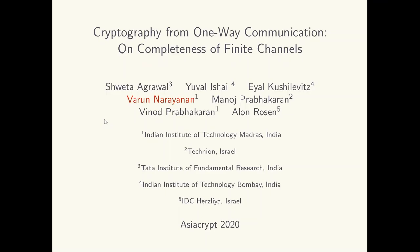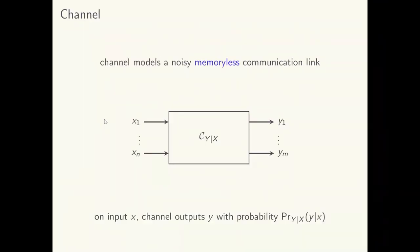In this presentation, we address the possibility of using one-directional communication over a noisy channel to securely compute two-party functionalities. First, let me quickly describe what a channel is. It is a mathematical model of a noisy memoryless communication link. It has a finite set of input and output symbols and it is fully described by the distribution over the output symbols induced by each input symbol.